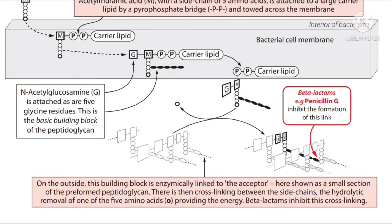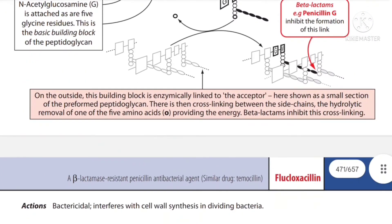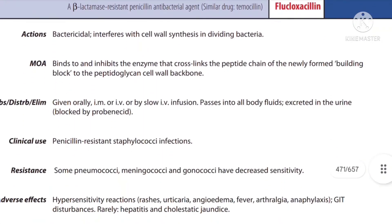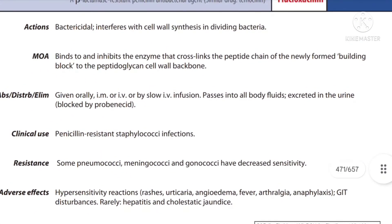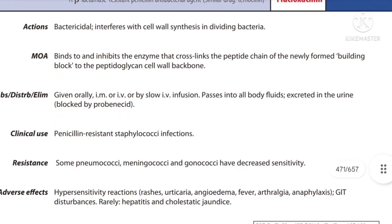This is the inhibitor mechanism we have discussed many times in the chapter on cell walls, and here we can see the visual and pictorial presentation of this mechanism. Its major action is bactericidal in nature — it interferes with the cell wall in dividing bacteria. The major mechanism of action is binding to and inhibiting the enzyme that cross-links the peptide chains of the newly formed building block to the peptidoglycan cell wall backbone.